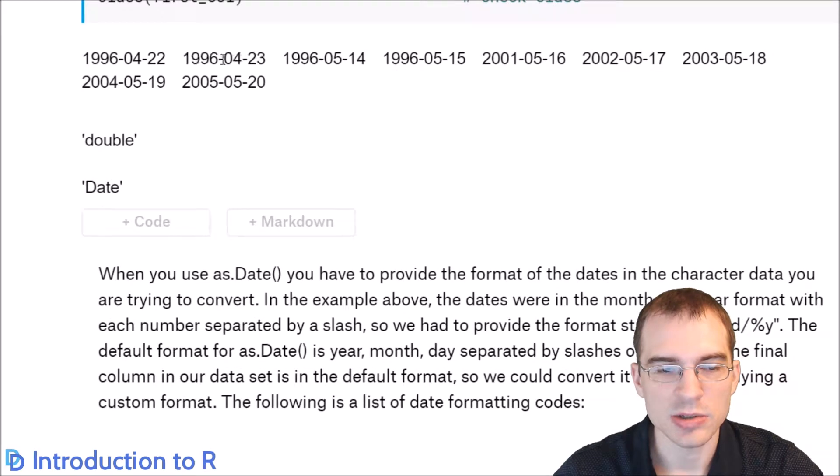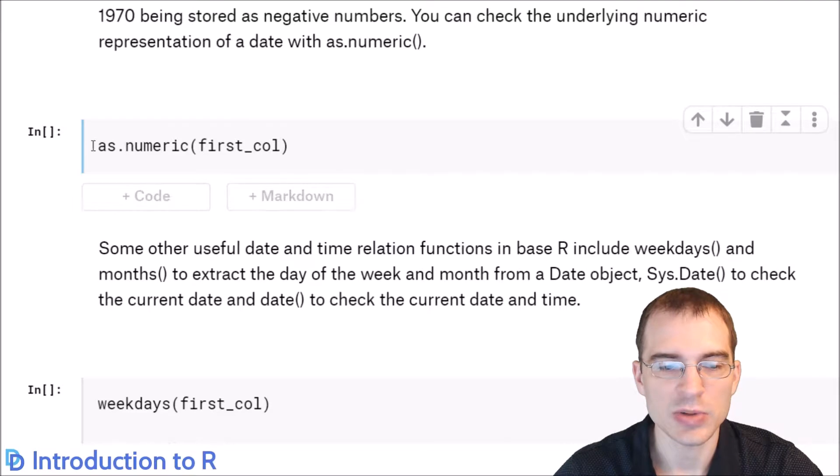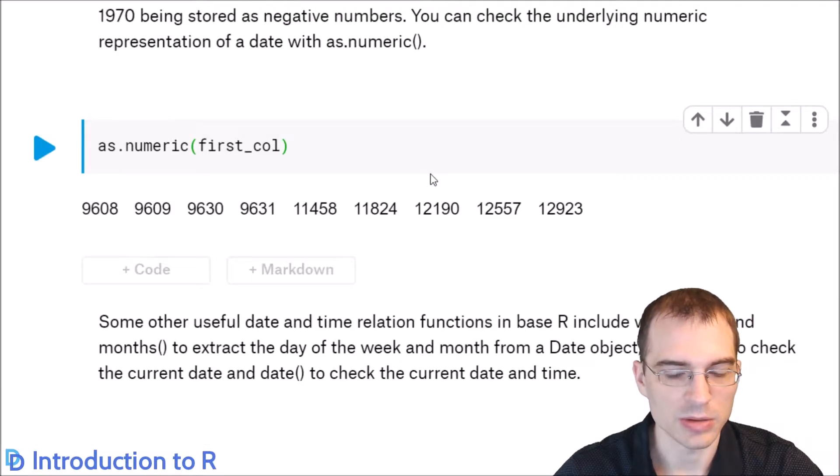When we printed the dates, they print out as full dates, but they're stored as doubles. The reason they're stored as doubles is that under the hood, these are actually just numbers which indicate the number of days since 1970, the first day of 1970. If we check the underlying numeric representation of these dates with as.numeric, we'll see a number that's the number of days since the first day of 1970.